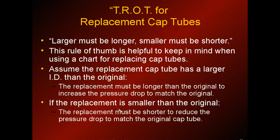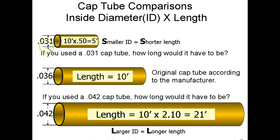Remember: if a cap tube has a larger diameter, you need a longer piece to get the same pressure drop; if it has a smaller diameter, it must be shorter. For example, a 0.031-inch cap tube at five feet has the same pressure drop as 10 feet at 0.036 inches, and 21 feet at 0.042 inches — each gives the same pressure drop to the evaporator coil.